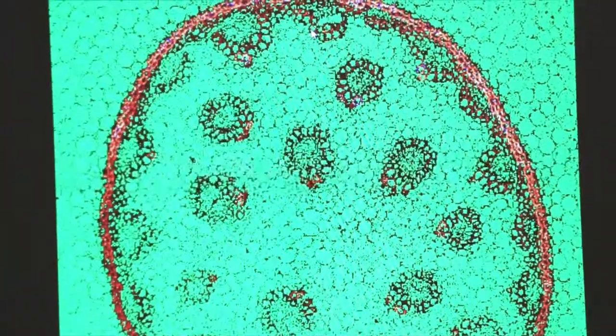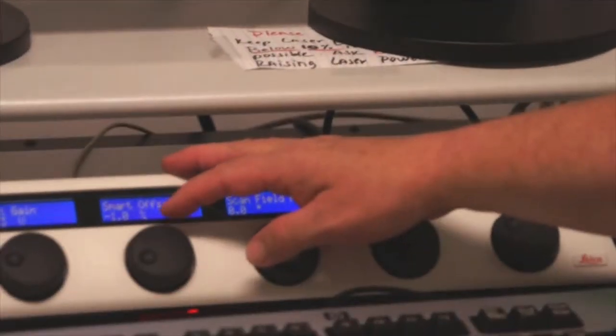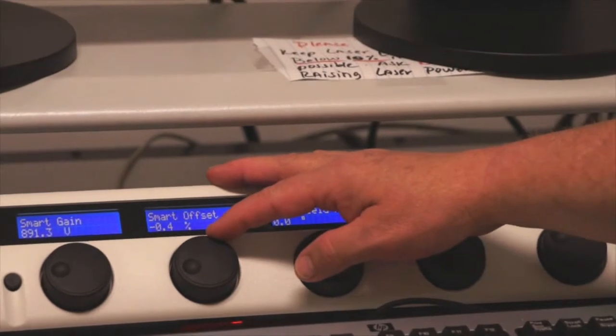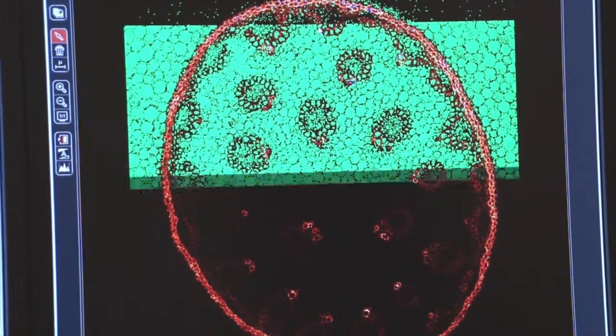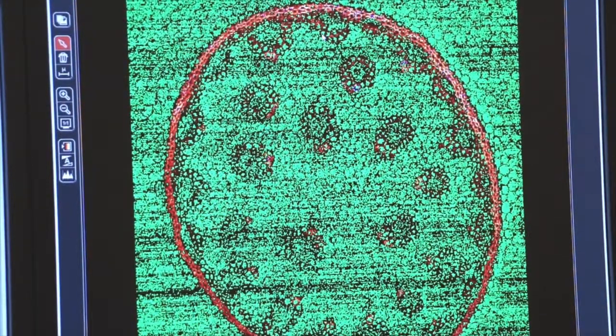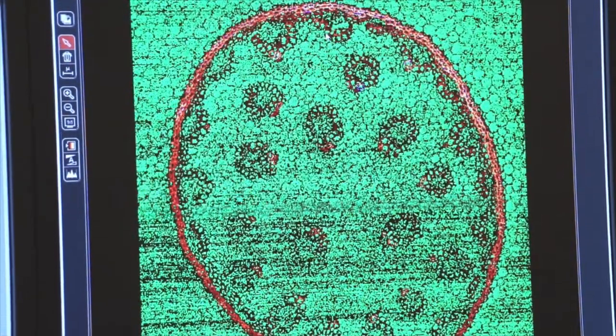That's the proper setting for my gain. For offset, I want to have as few green pixels as possible just before it goes completely dark. So I adjust my offset until I have just a few green pixels and you can see there, that's the proper setting for my offset.